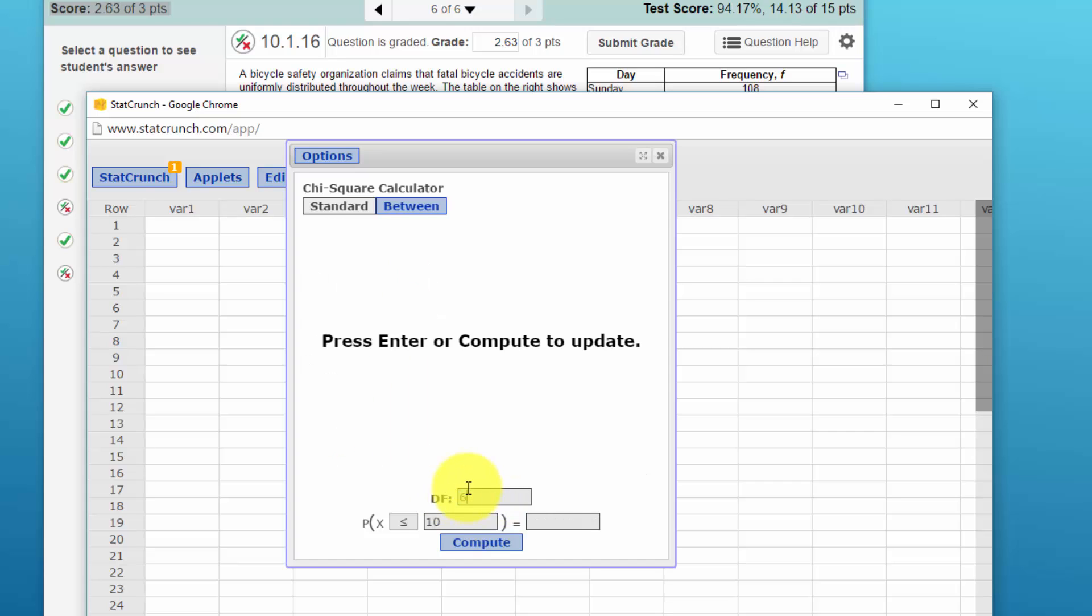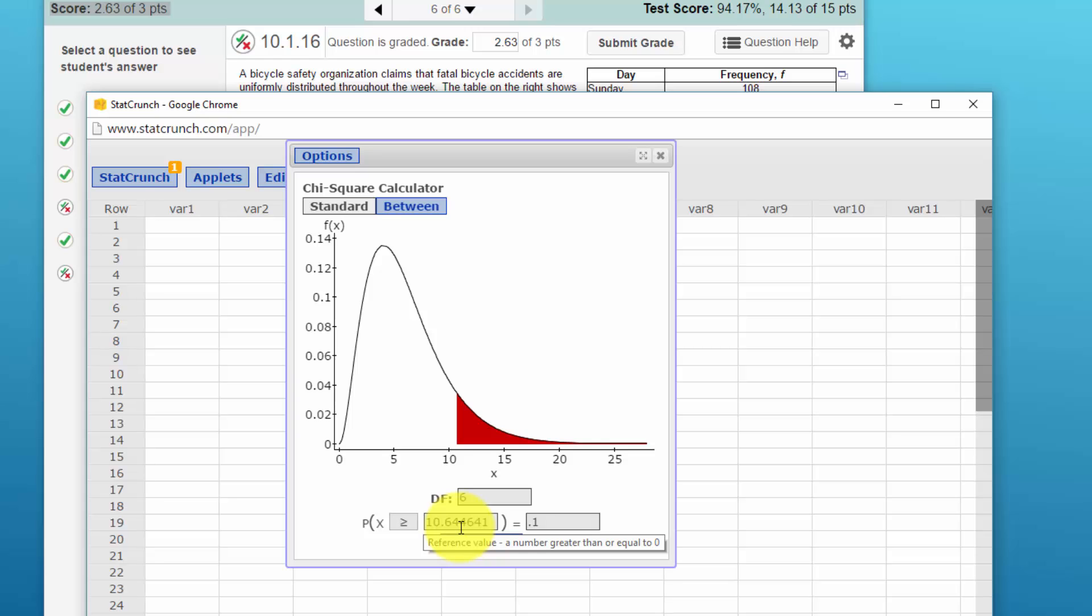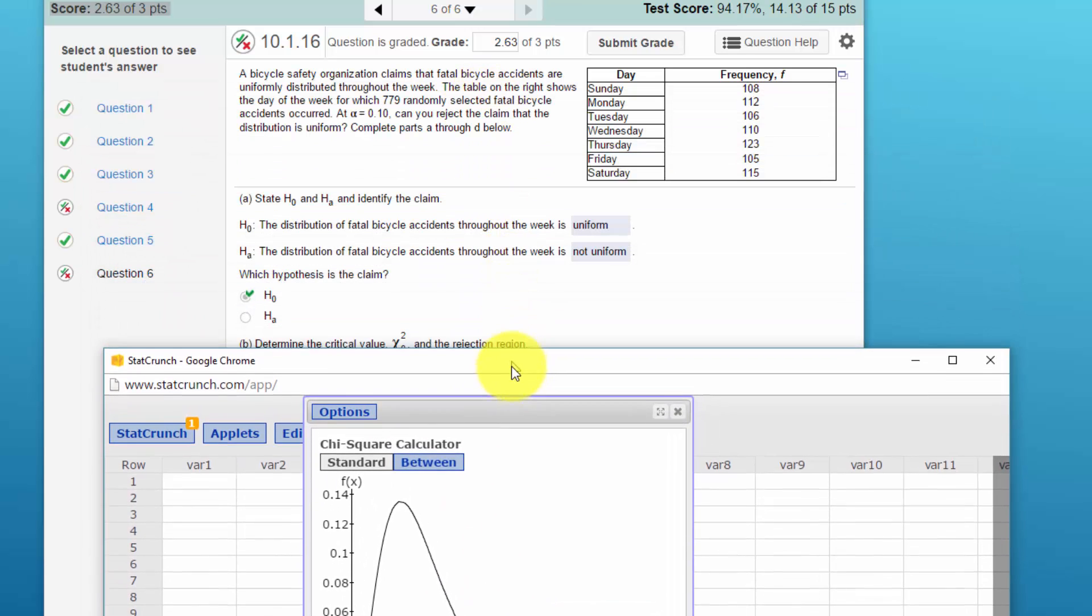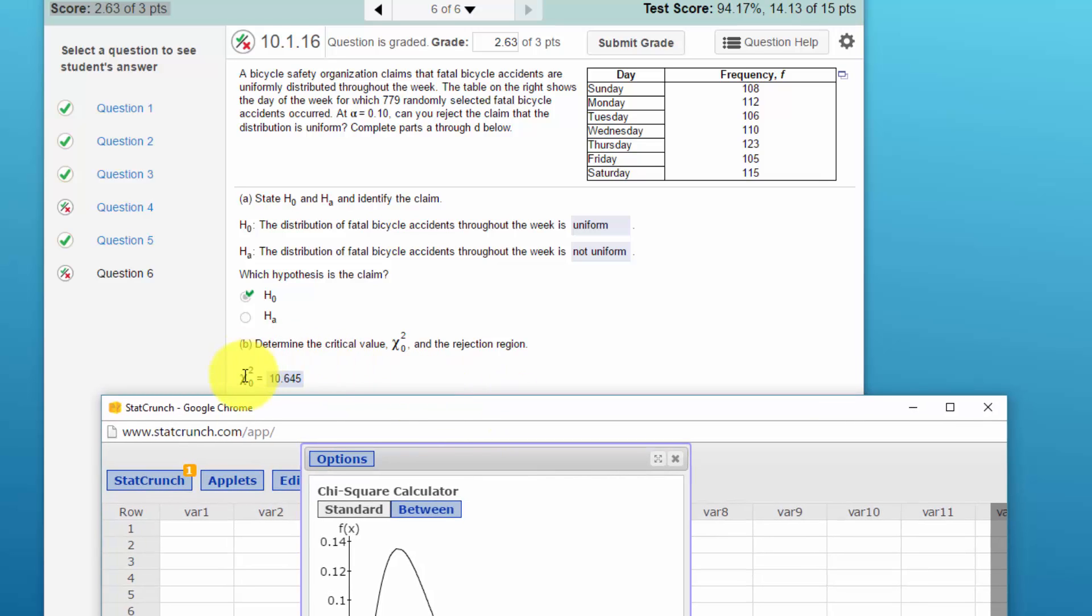So I'm going to put degrees of freedom of six. Our alpha always goes in the right tail, point one, and we always want a right tail test for either the goodness of fit or the tests for independence. So that gives us a critical value of Chi-Square of ten point six four five. Let's see, is that the answer? Yes, that is the answer that they have.